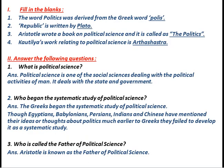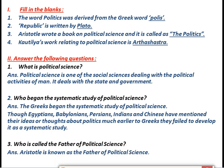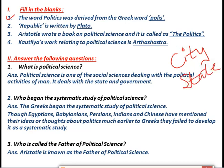Let's start with the question answers of the chapter Meaning and Importance of Political Science. First we have some fill in the blanks. The first question is: the word 'politics' was derived from the Greek word dash. The word politics was derived from the Greek word 'polis', which means city state. Sometimes the question can also be asked: what was the meaning of the term polis? Remember that the term polis means city state.